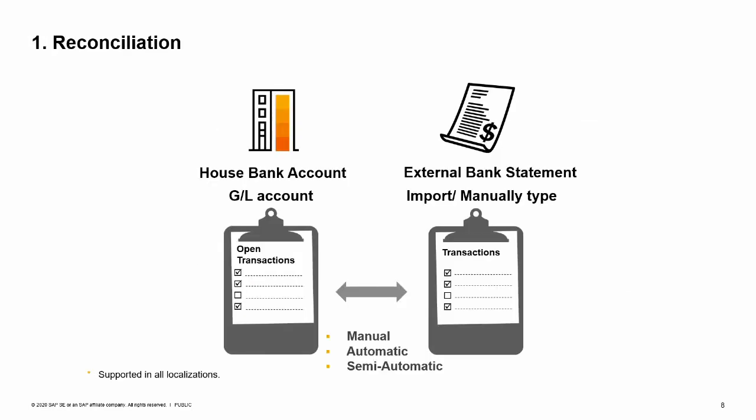The first option in SAP Business One is called Reconciliation. It is supported in all localizations. With this option, you first import or manually type the bank statement transactions into the system using the Process External Bank Statement function. If needed, you can add this window using the Form Settings main menu. Then, the system displays side by side the open transactions from the GL account in SAP Business One and the imported or typed transactions from the bank statement. You reconcile between matching transactions on the SAP Business One side and the bank side. If required, you can perform balancing transactions to match your data with that of the bank. You can choose a reconciliation type: manual, automatic, or semi-automatic. These work in a very similar manner to the internal reconciliation types.